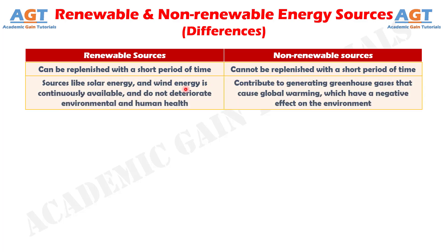Number 2: Renewable energy sources like solar energy and wind energy are continuously available and do not deteriorate environmental health or human health, whereas non-renewable energy sources contribute to generating greenhouse gases that cause global warming, which have a negative effect on the environment.